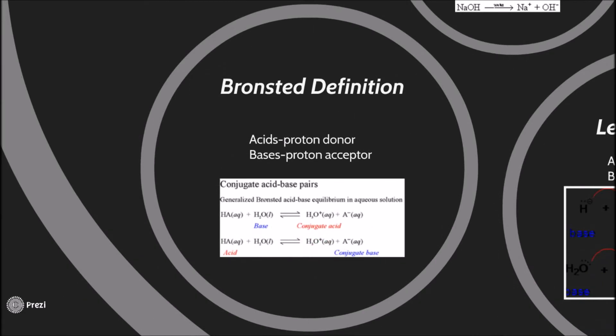Bronsted definition. Acids are a proton donor. Bases are a proton acceptor. In the picture below, you can see the generalized Bronsted acid base equilibrium. In the picture, the acids are giving away a proton and the bases are taking the proton in.